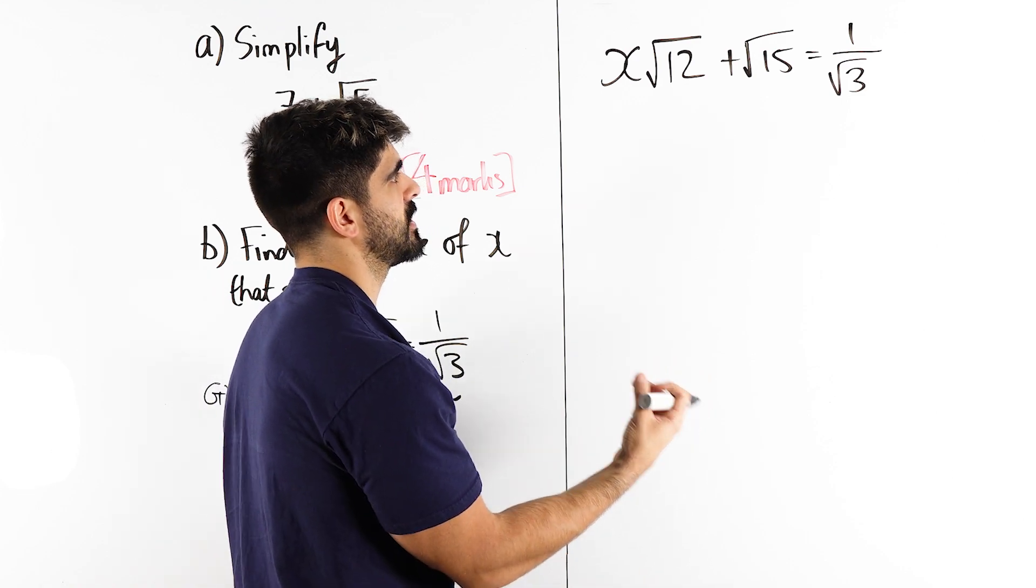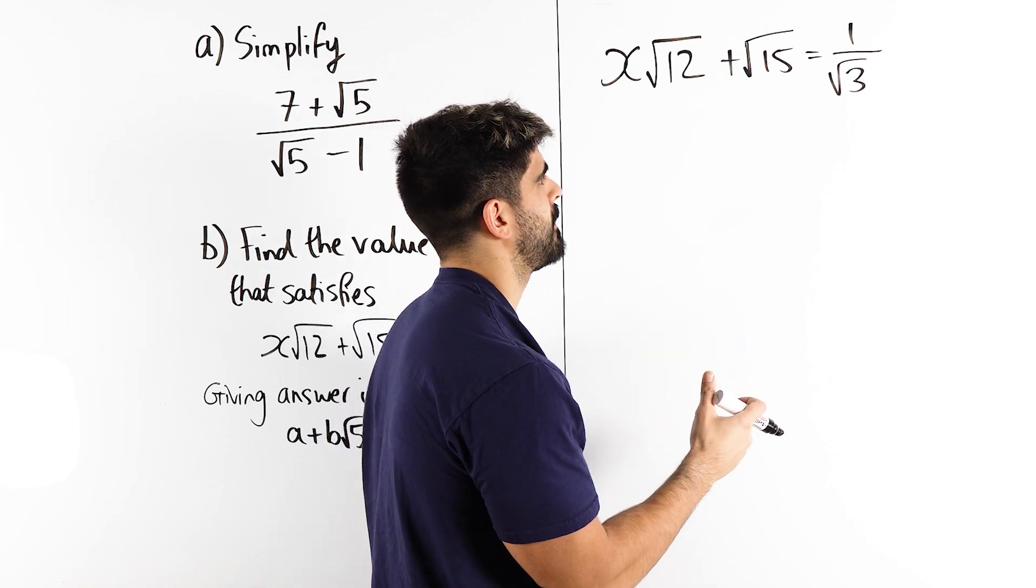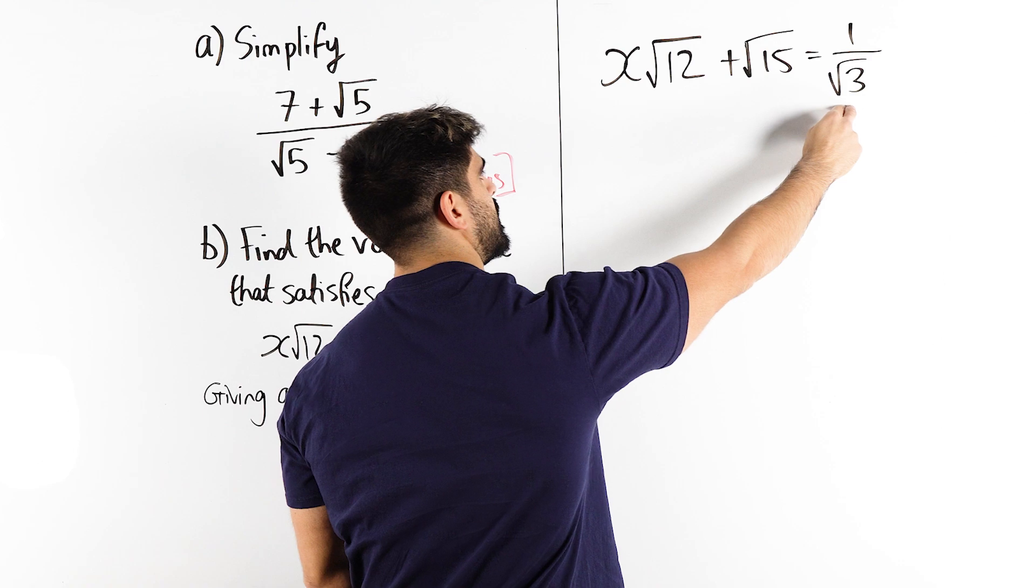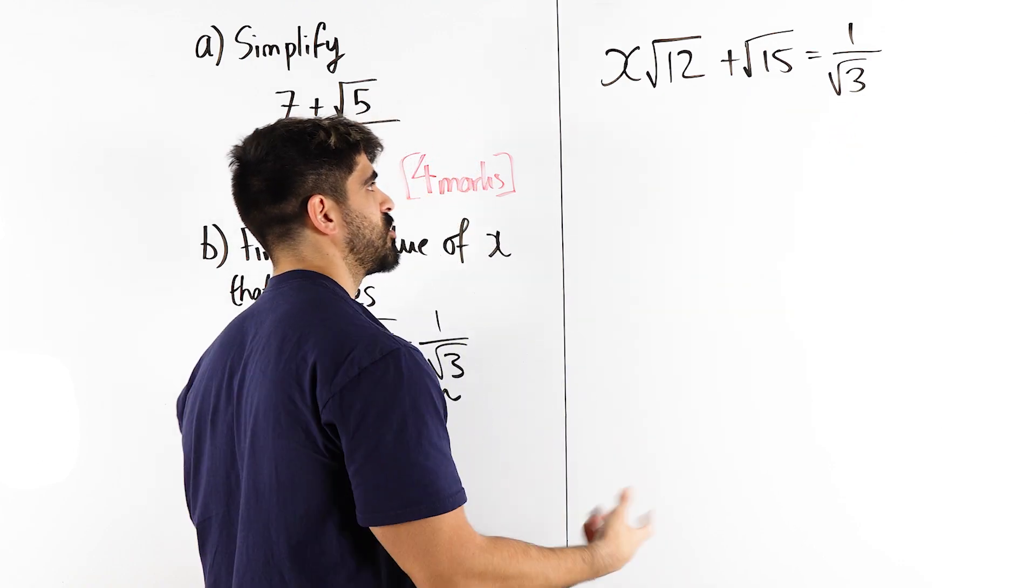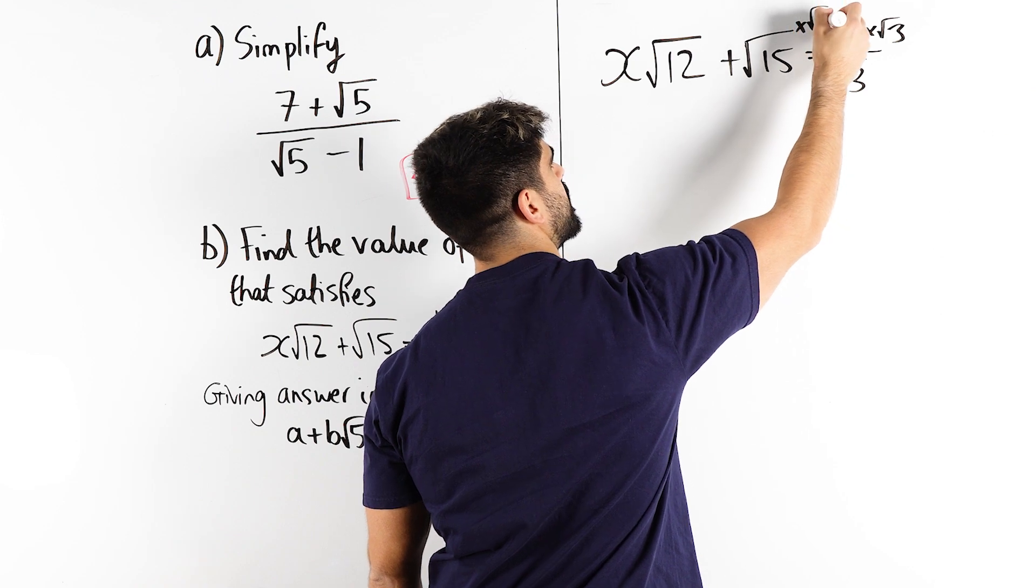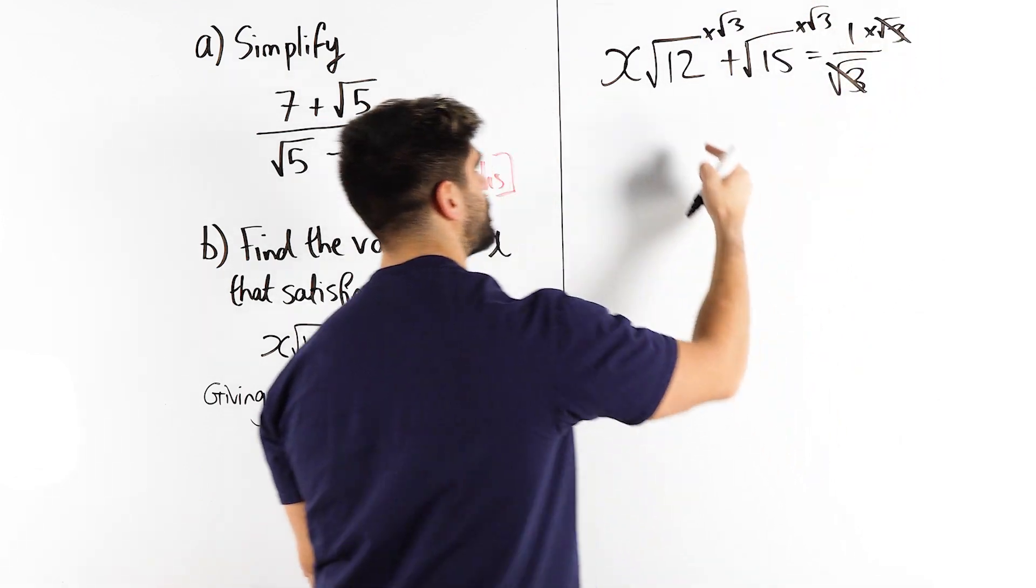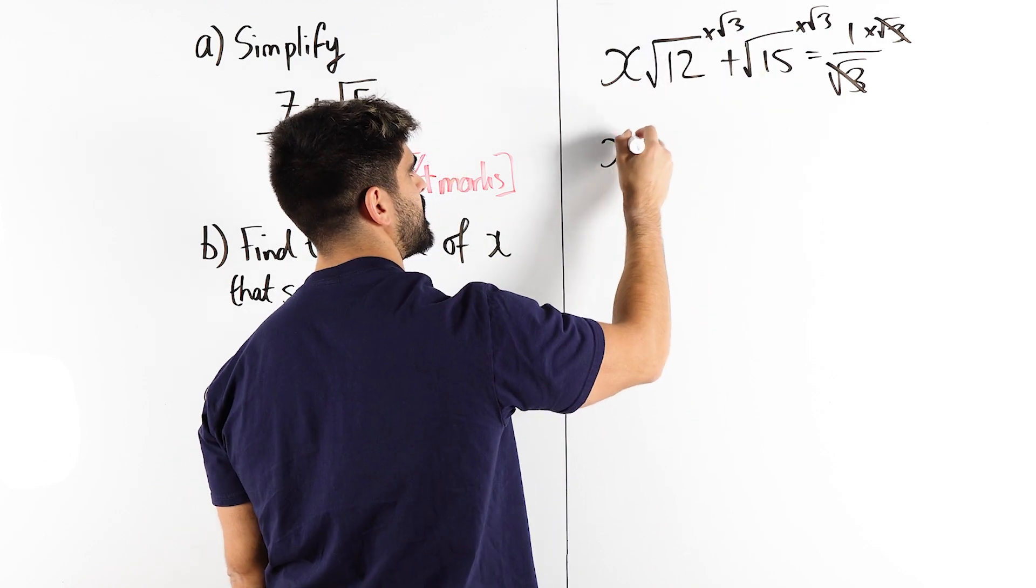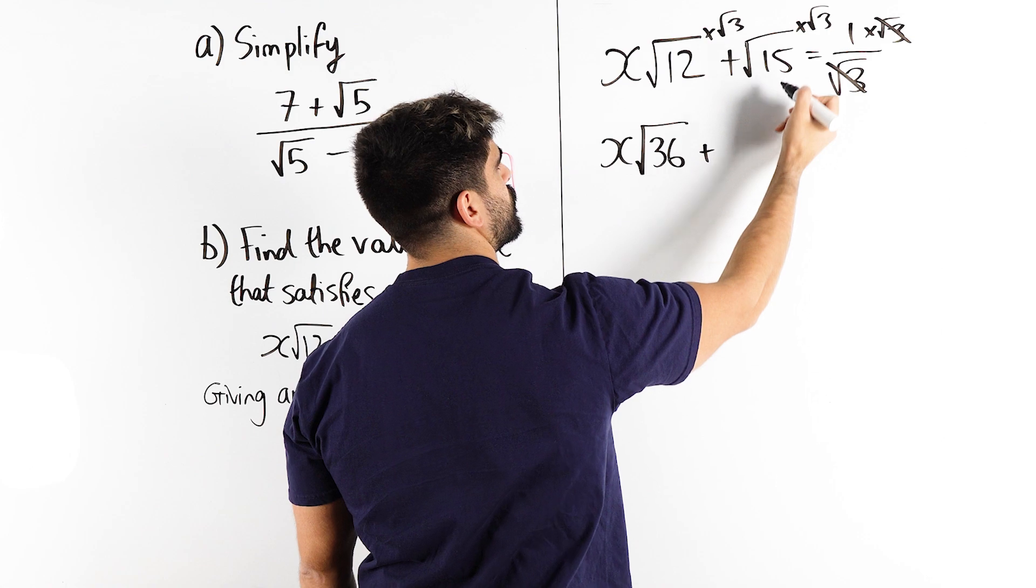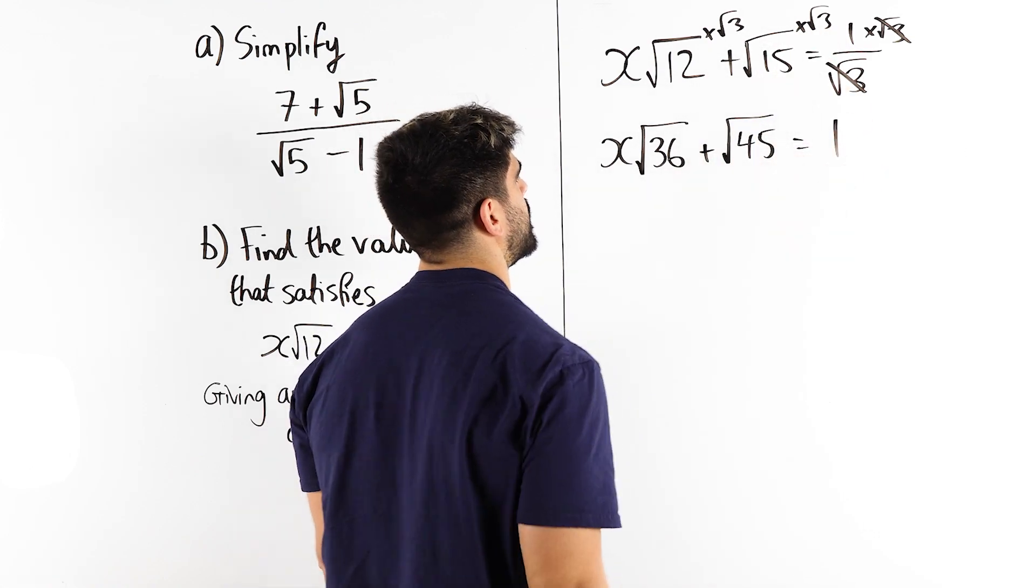Another way you could think about doing this is, and I teach this to my students all the time at my headspace, if you guys are interested in my GCSE courses, check the description, is we do not like fractions. So actually what I'm going to do is I'm going to multiply through by root 3 to get rid of denominators. So that goes root 12 times root 3, 12 times 3 is 36. Plus root 15 times root 3, 15 times 3 is 45, is 1. Beautiful.